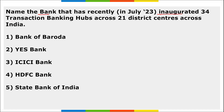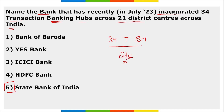Which bank recently inaugurated 34 transaction banking hubs across 21 district centers across India? It is the State Bank of India. These hubs aim to provide efficient and quick banking transaction facilities to customers. SBI's goal is to meet all customer needs and offer comprehensive solutions for transaction, payment and collection requirements in one place.